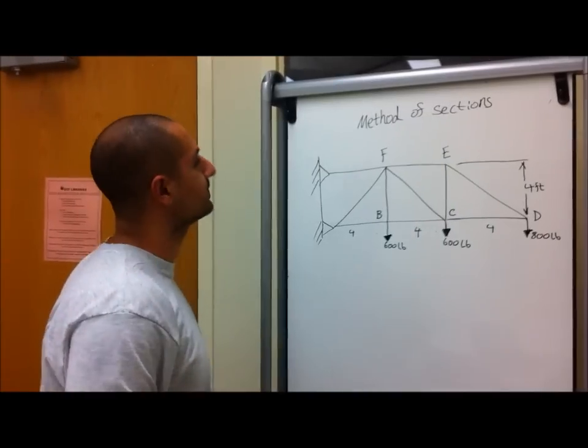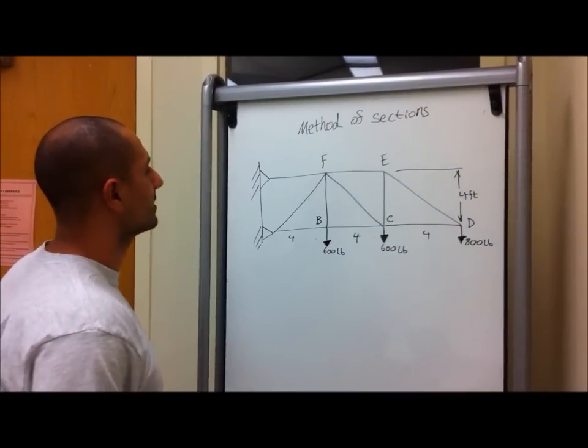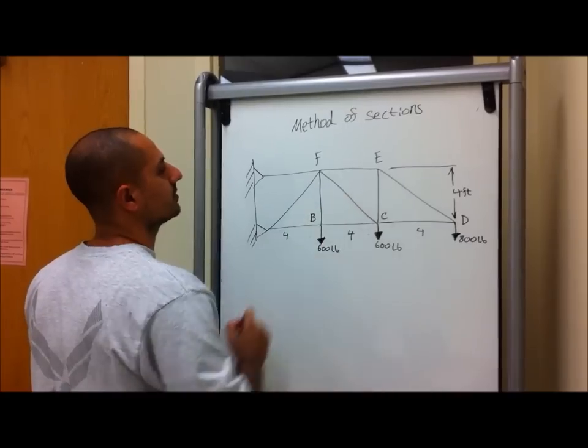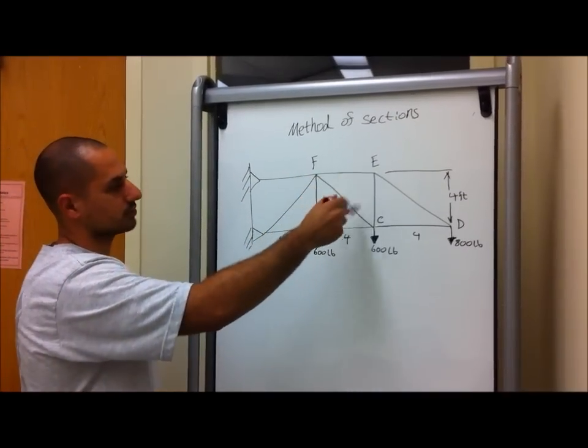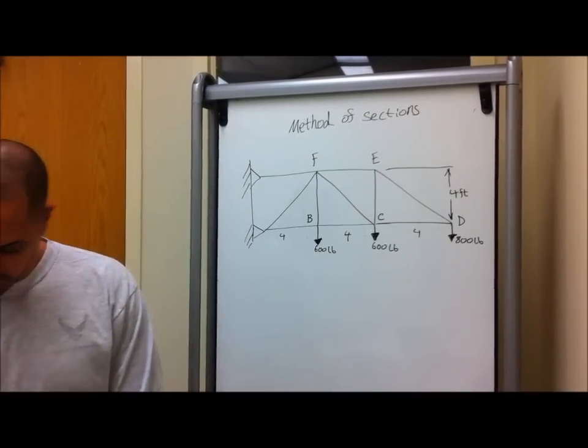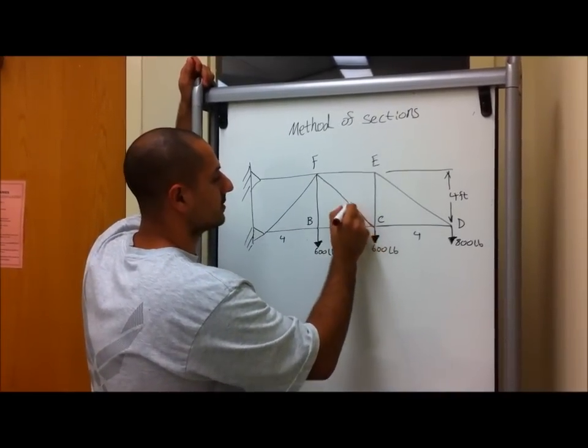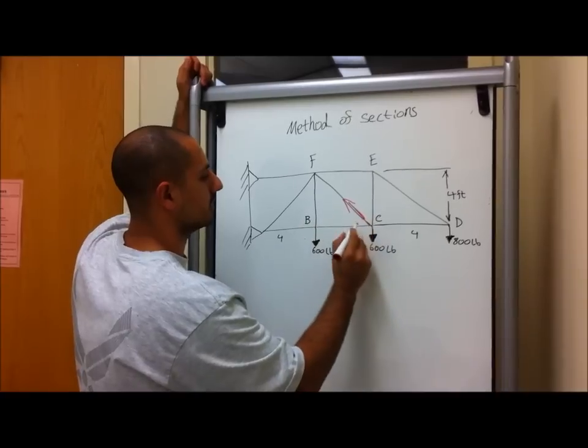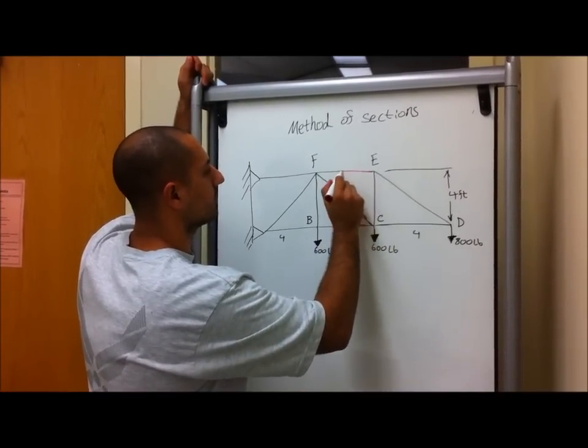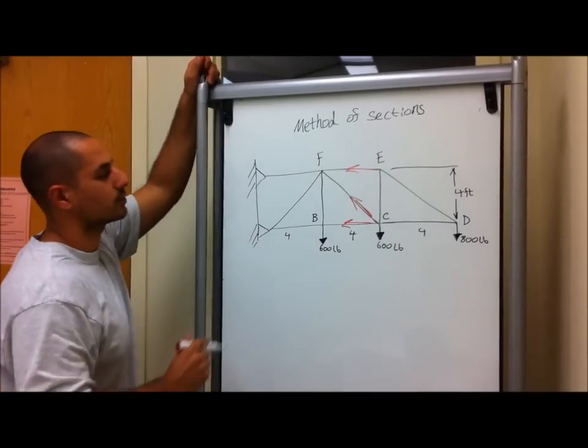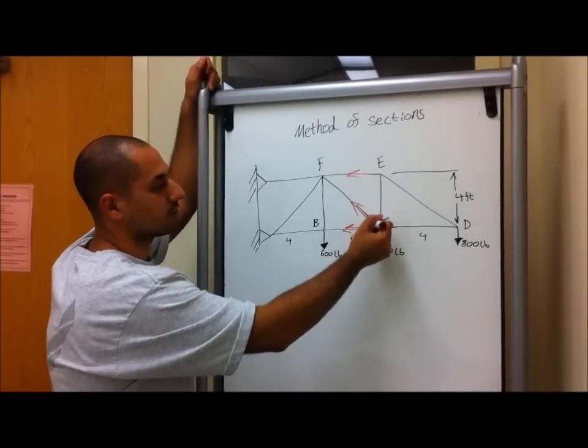All right, how's everybody doing? Today we are working on finding the internal forces using the method of sections. This is a truss, a couple of trusses. Our question deals with finding the force that's acting on CF, and then also CB, and then the force from EF. So our main goal is to determine the magnitude of these internal forces.